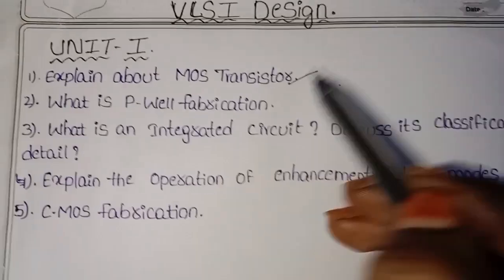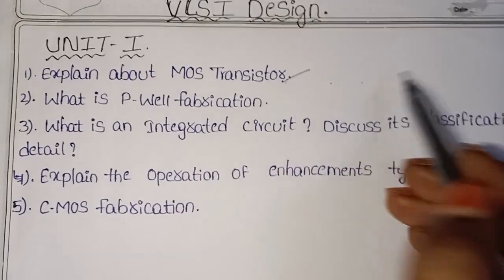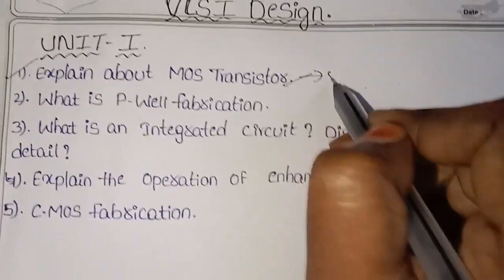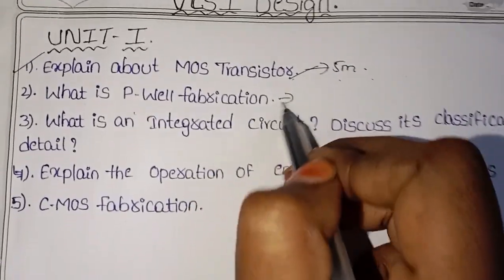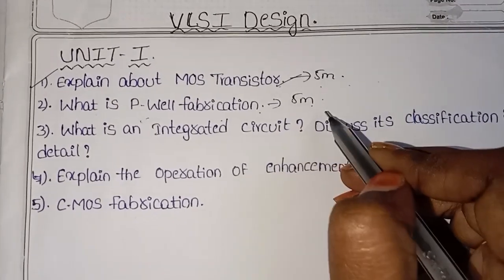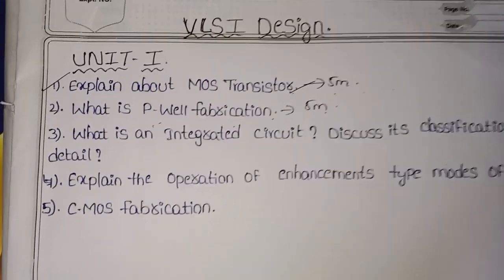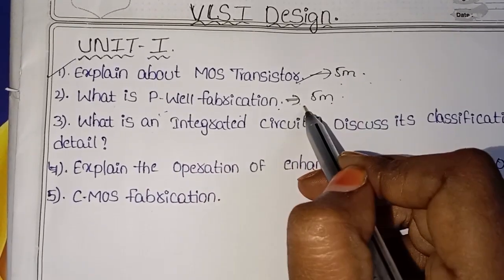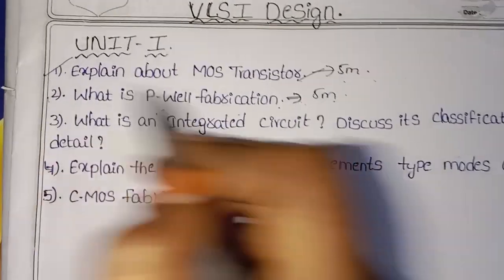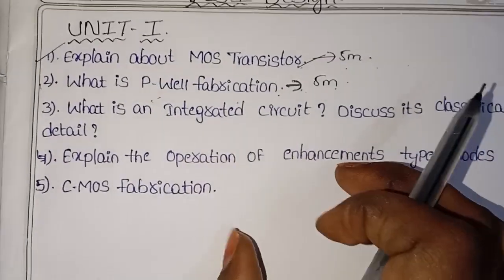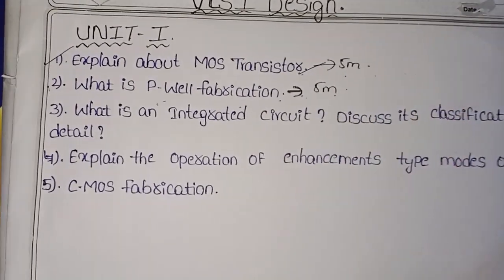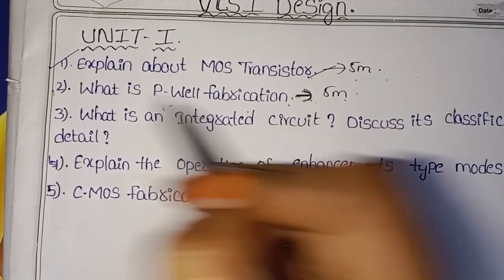Write the definition for Depletion Type — it has P-type and N-type. Take the Enhancement Type side heading as well. Enhancement Type also has P-type and N-type — this covers 5 marks. In the previous paper, one question was: 'What is P-well fabrication?' worth 5 marks. P-well fabrication is part of CMOS; write the definition and graphical symbol representation.